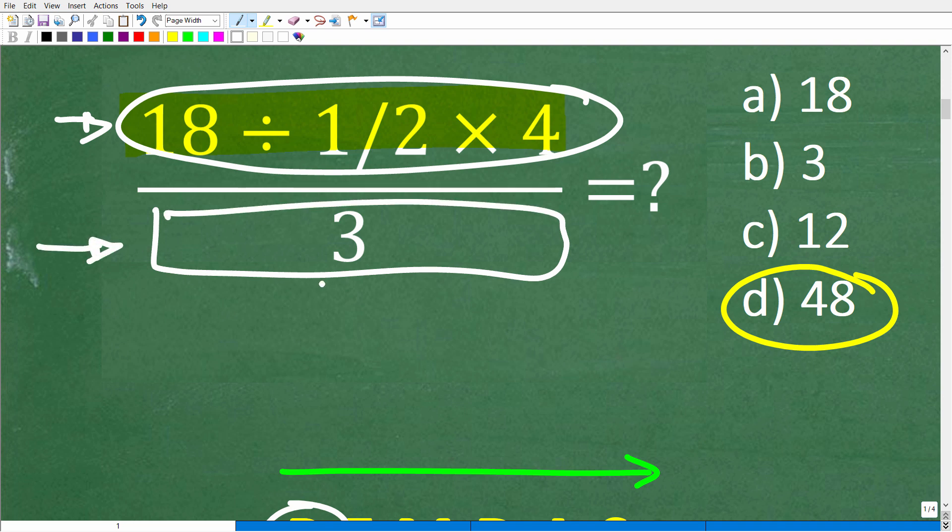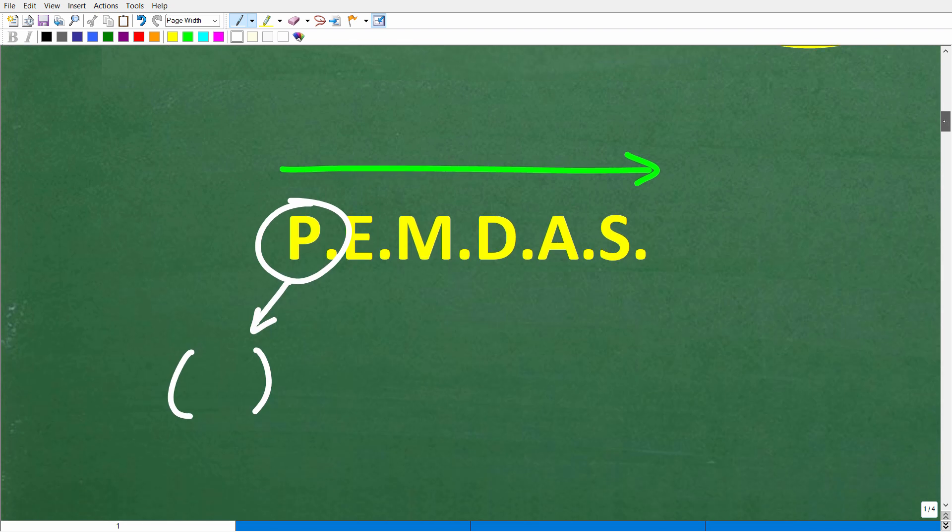Same thing with the denominator. Do all the math down in the denominator, and then once you're done with everything in the numerator and everything in the denominator, then simplify the problem.